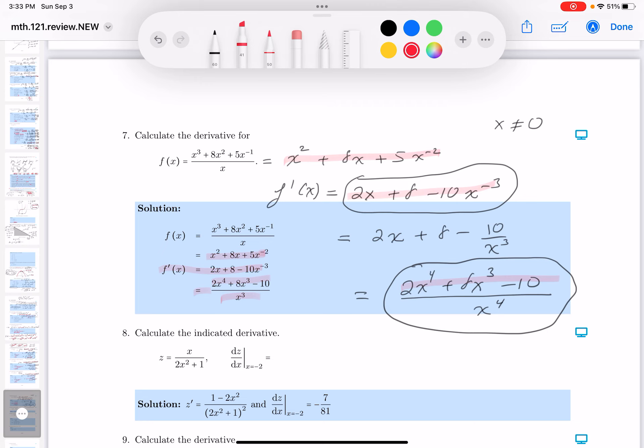Did I simplify it correctly? Let's take a look at it. 2x to the 4, 8x cubed, yeah it looks great.